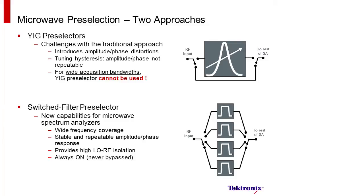So we've seen the two different approaches for the use or the implementation of microwave preselection. With the Agilent PXA, a YIG preselector is used. This is a traditional approach. There are a lot of advantages to using this approach. However, the big disadvantage is for wideband acquisitions, the preselector cannot be used due to the nonlinear nature of YIG preselectors, especially for wider bandwidths, wider than about 40 megahertz.